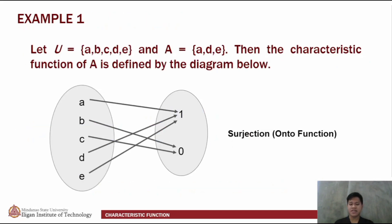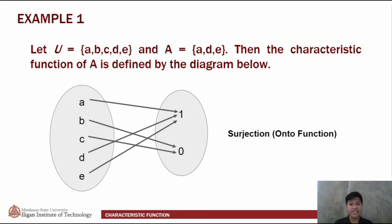Here we have our first simple problem. Let U be a set containing the elements a, b, c, d, and e, and A as a set containing the elements a, b, and e. Then the characteristic function of A is defined by the diagram below. We can see that the letters a, b, and e are matched with the value 1, whereas d and c are matched with the value 0, because the elements d and c are not elements of the set A, which is composed only of the elements a, b, and e.